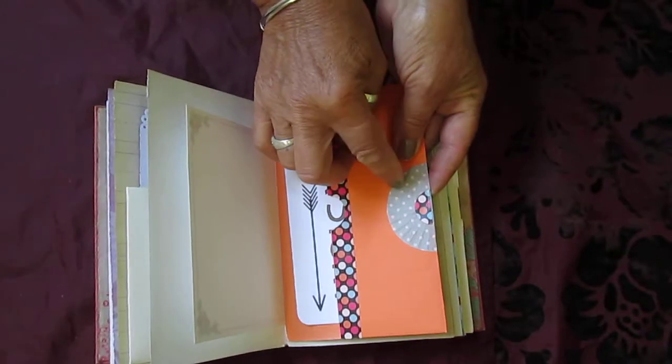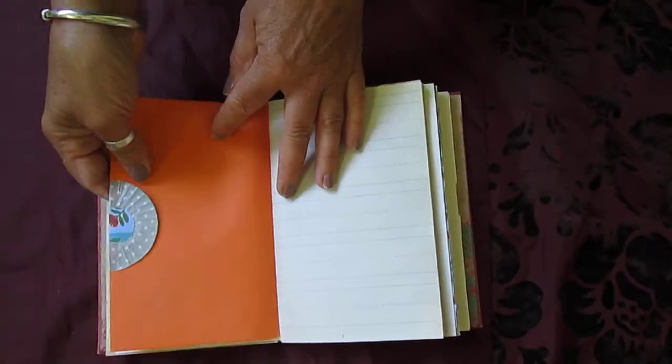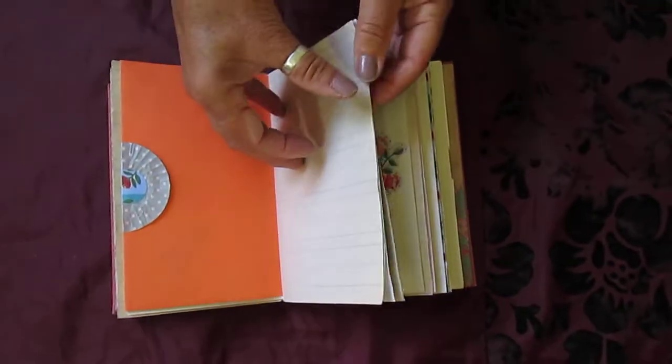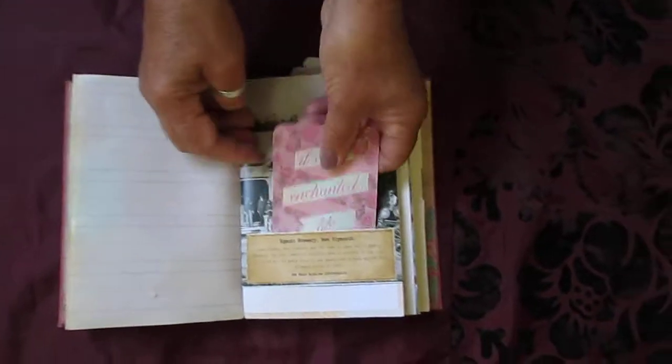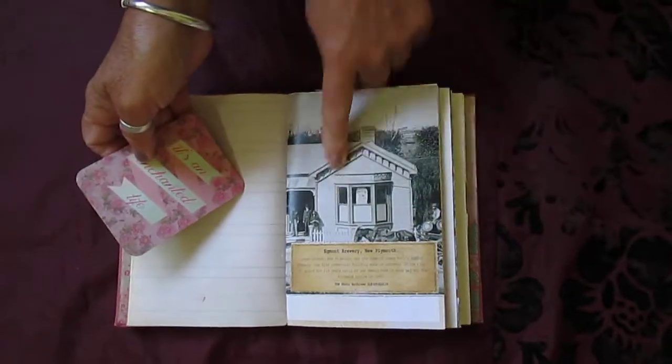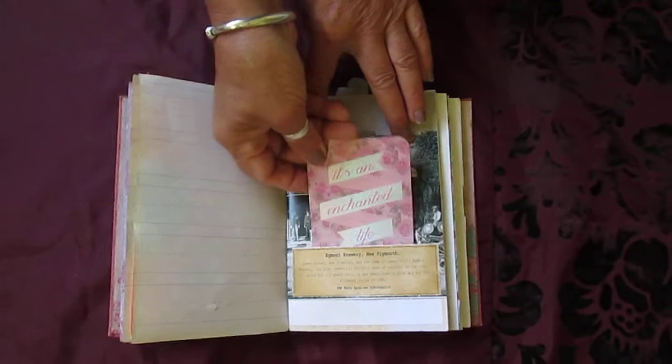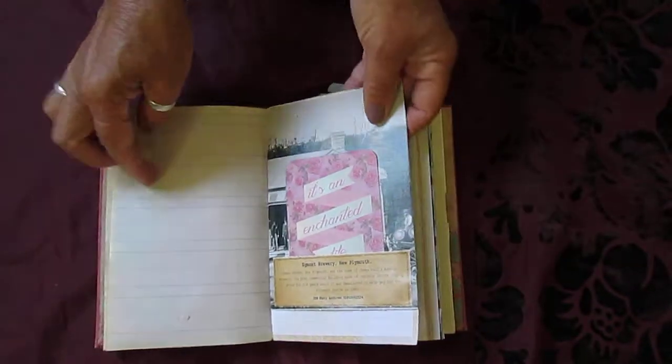It's not a tuck spot but it's a cupcake paper. Quite pretty. Tuck spot there. These old images are from a New Zealand calendar. Places around close to where I live.